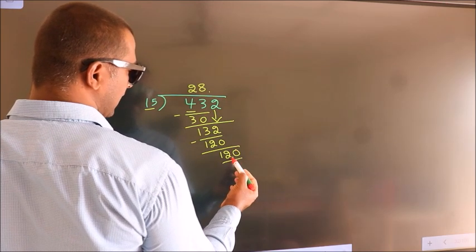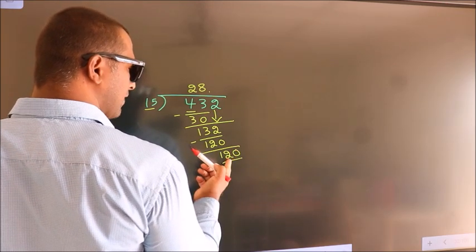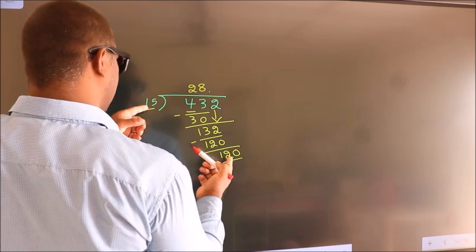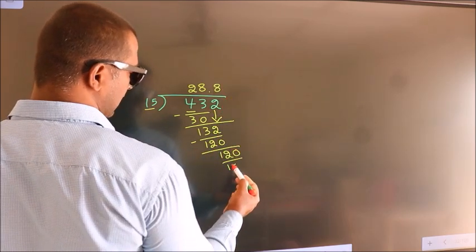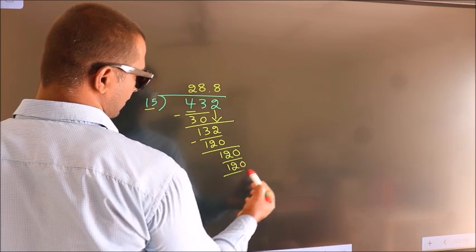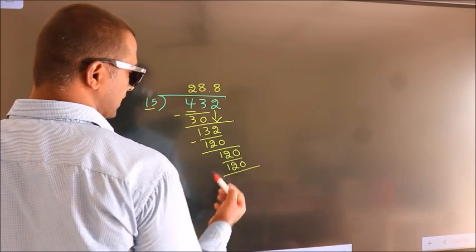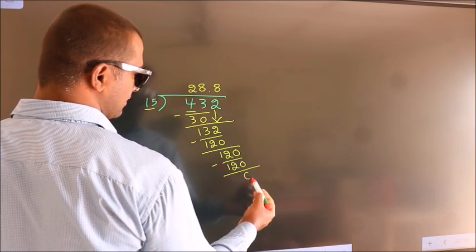So 120. When do we get 120? In the 15 table: 15 times 8 equals 120. Now we subtract. We get 0.